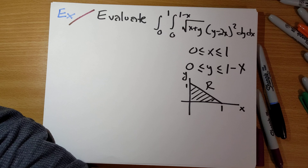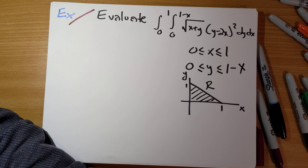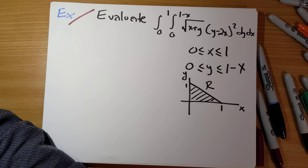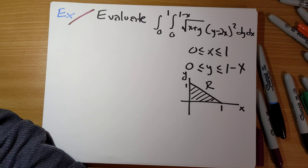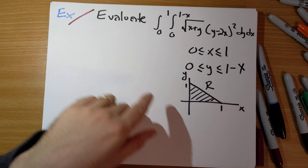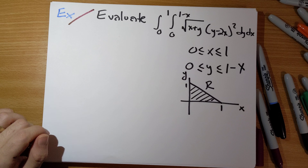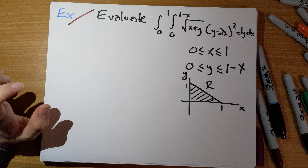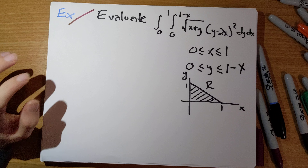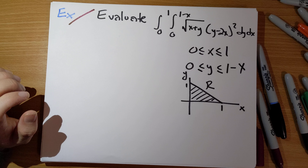We probably could integrate this, but it would take a good amount of effort. So instead, what we're going to do is try to use a substitution — not to simplify the region that we're integrating over, but to simplify the integrand itself. We'll then have a slightly more complicated region to integrate over, but a much nicer integrand, and that will be worth the price.